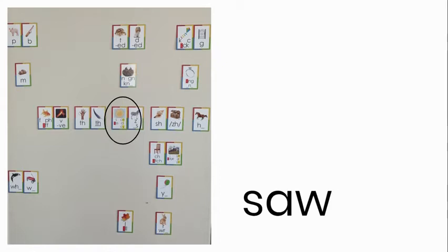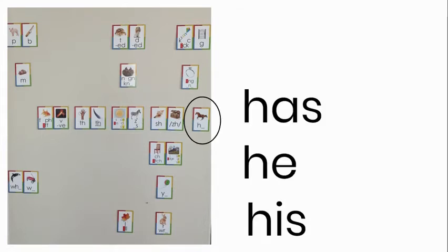Now we move over to S. Say saw. S-aw. Saw. And then you have the H. Your throat is open and the airflow starts at the back of your throat. Say has. Say he. Say his. Notice both has and his have that voiced S sound, so it sounds like a Z.